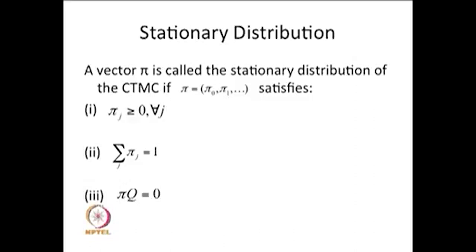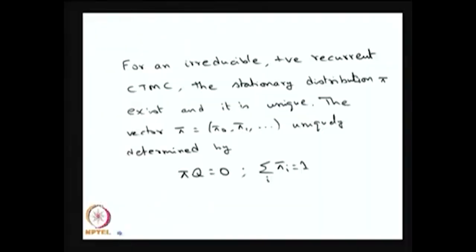We are always discussing the time-homogeneous CTMC by default. The main result is: whenever a CTMC is irreducible and positive recurrent, the stationary distribution exists and is unique. Unlike DTMC, there is no periodicity condition required for CTMC states. Therefore, as long as the system is irreducible and positive recurrent, the stationary distribution exists, is unique, and can be obtained by solving the given equations.